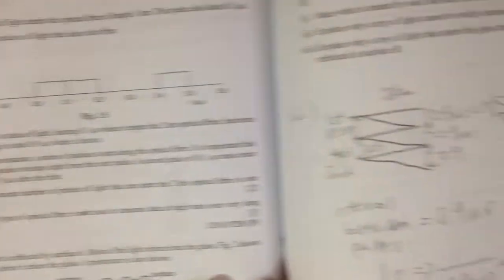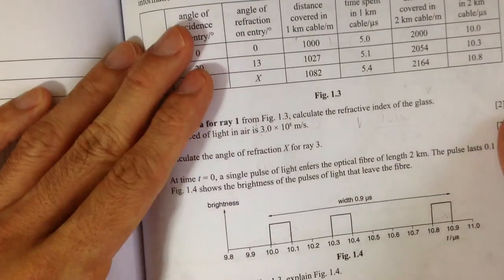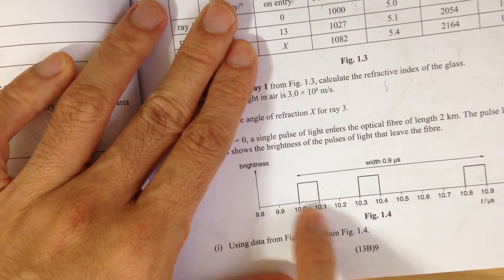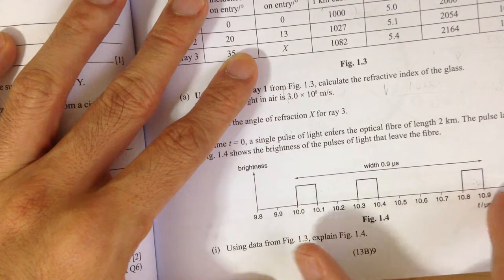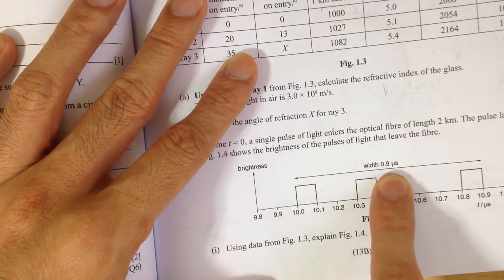So what it means is this. Let's look at figure 1.4 again. What happened is that originally the pulse is only 0.1 microsecond in width when it enters. So when it exits, it becomes 3 pulses with a spread of 0.9 microseconds.